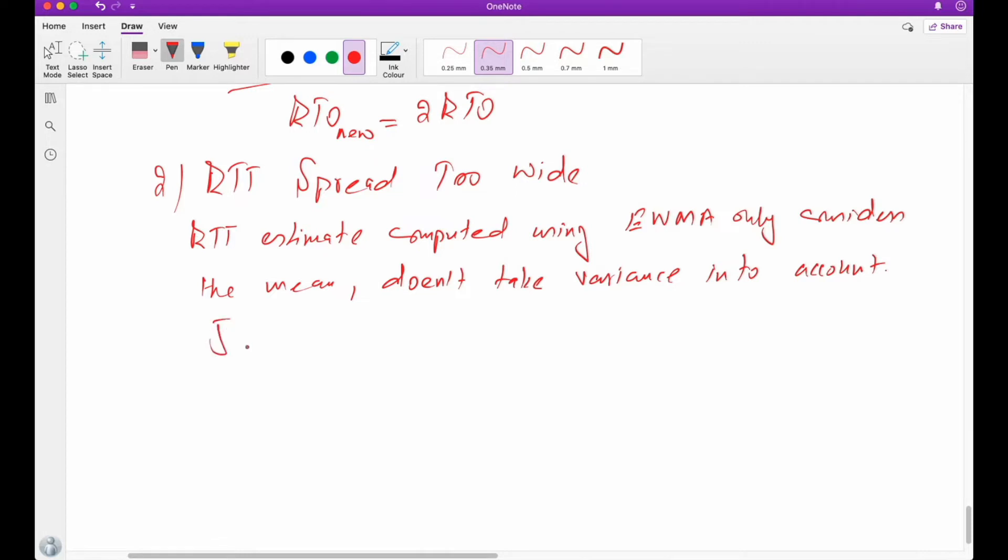Solution is proposed by Van Jacobson. So Jacobson's algorithm. What it says? It says estimate deviation of sample RTT. So we have to estimate deviation of variance. We have to estimate deviation of sample RTT.